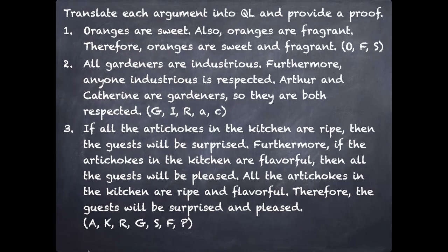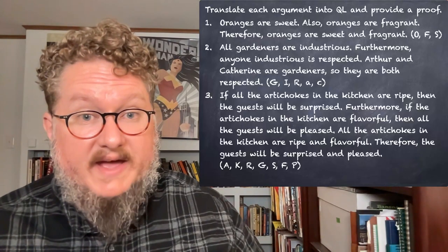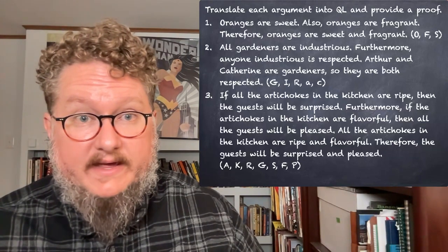I want you to pause the video and do this for all three arguments. I've provided a sort of abbreviated symbolization key for the different predicates and constants that you'll use for each of these arguments. So pause the video, give it a go, come back when you think you have it. All right, welcome back. Let's see how you did.